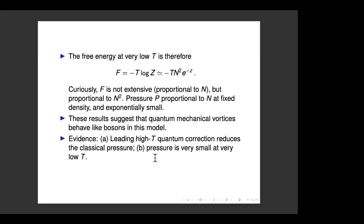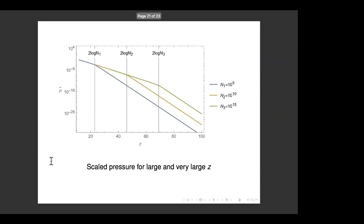The other evidence for bosonic behavior is that the pressure is very small — exponentially small — at very low temperature. Fermions behave very differently: for a Fermi gas at low temperature you fill up states to the Fermi level, and reducing the available area increases the Fermi energy, so you have a positive pressure as T → 0. This gas has extremely small pressure at low temperature, which suggests bosons. That said, we don't have a strong physical understanding of exactly what it means.